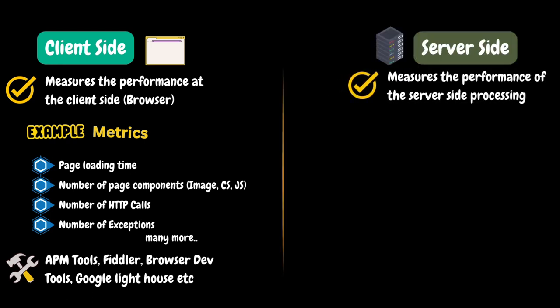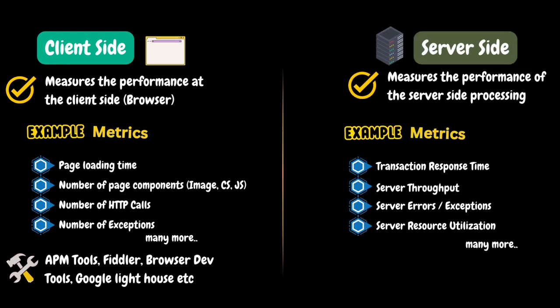Server side monitoring measures the performance of the server side processing. Some example metrics are transaction response time, server throughput, server errors or exceptions, server resource utilization, and many more. We can use APM tools or performance testing tools to monitor server side performance.